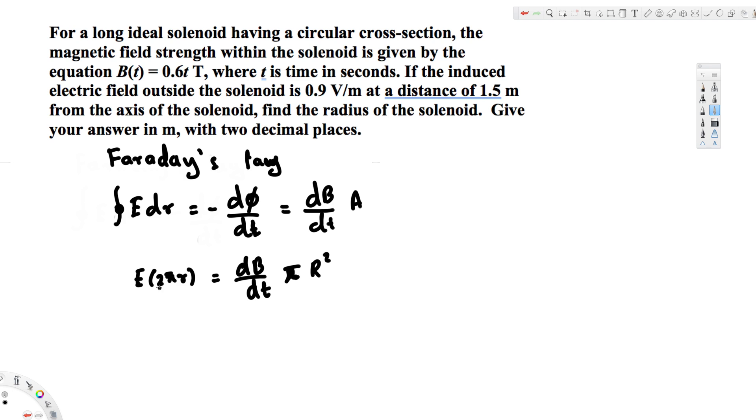πr². Okay, let's put a capital R, because these two are different. This r represents the distance from the axis of the solenoid, and this is the r we are trying to find. That's the radius of the solenoid.